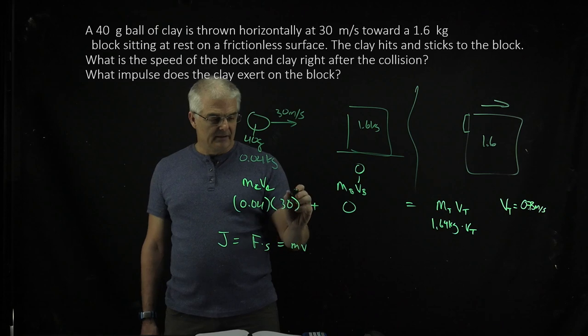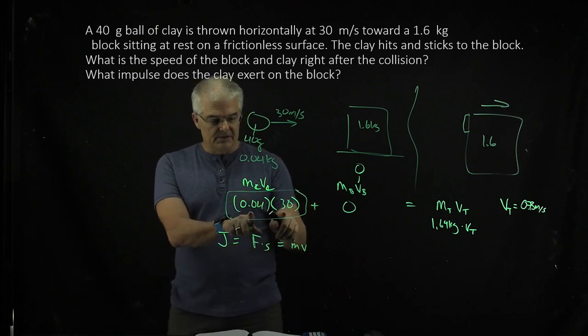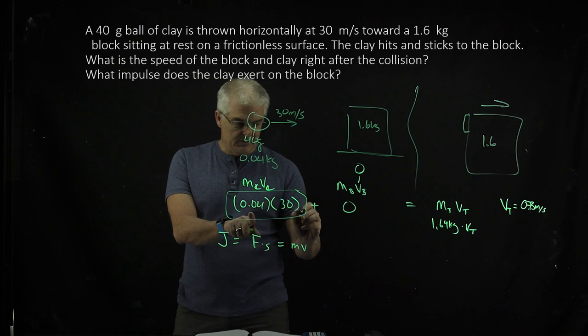The only impulse is coming from the moving clay. So the impulse is these two numbers multiplied times each other.